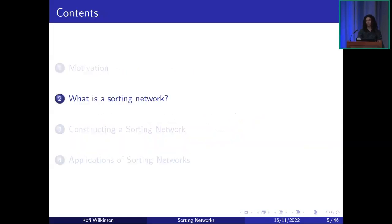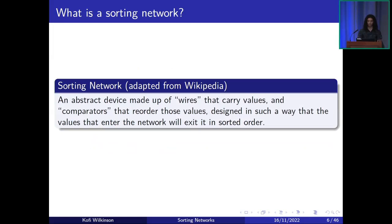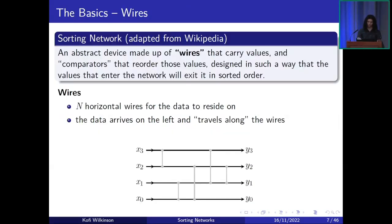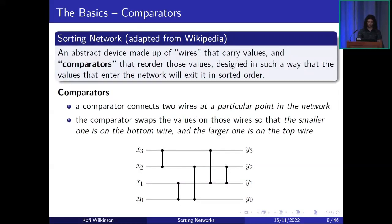So now the question is: what is a sorting network? A sorting network is an abstract device made up of wires that carry values and comparators that will reorder those values, designed in such a way that the values that enter the network will exit it in sorted order. A sorting network has n horizontal wires for the data to reside on, and the data will arrive on the left-hand side of the diagram and travel along the wires towards the right. A comparator connects two wires at a particular point in the network, and it will swap the values so that the smaller ends up on the bottom wire and the larger on the top.